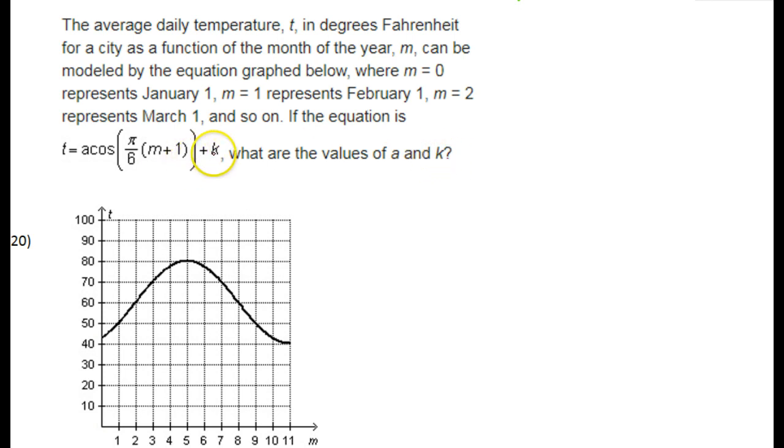Alright, well let's start with K because that's going to be the easiest. This K value on the end is always going to be the vertical shift, also known as the midline. So where's the midline of this graph?